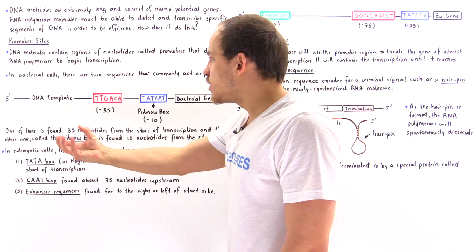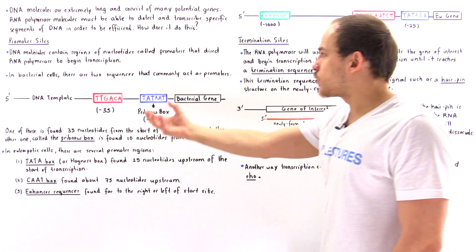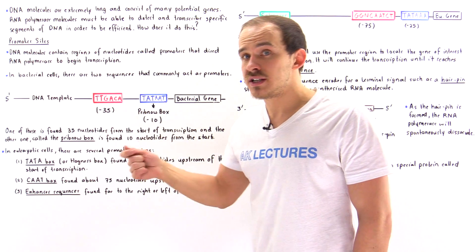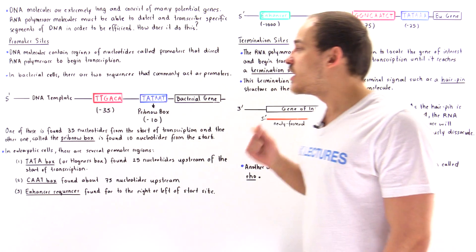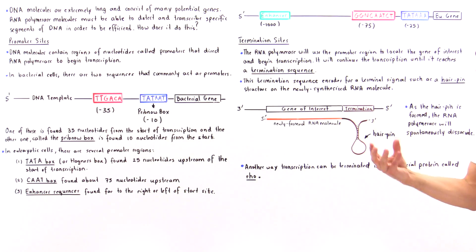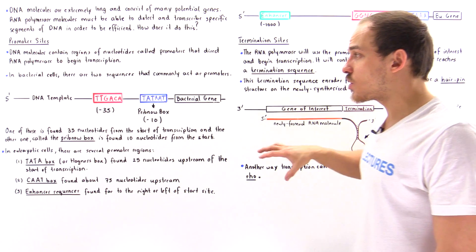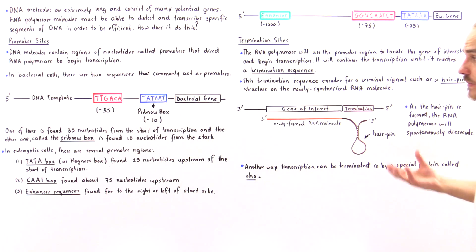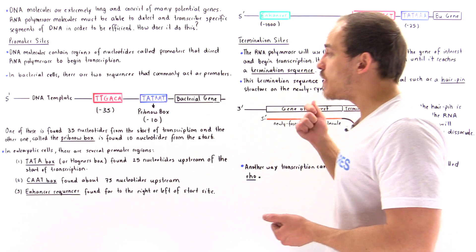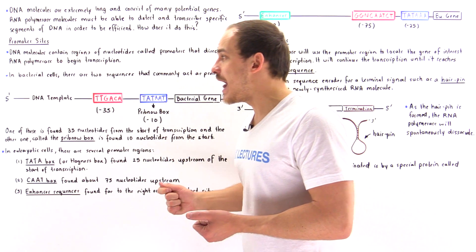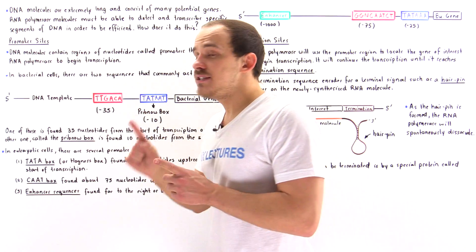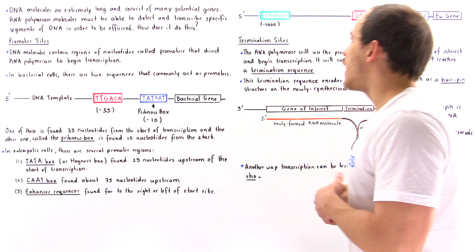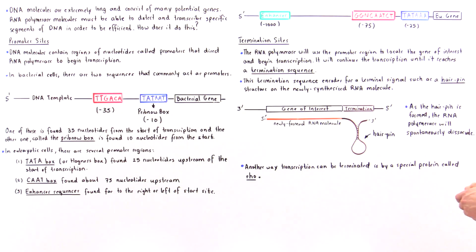The RNA polymerase travels very quickly along our DNA molecule until it locates these promoter regions, at which point it binds and begins the process of transcription. It transcribes the gene using the DNA molecule complementary to the strand shown here.